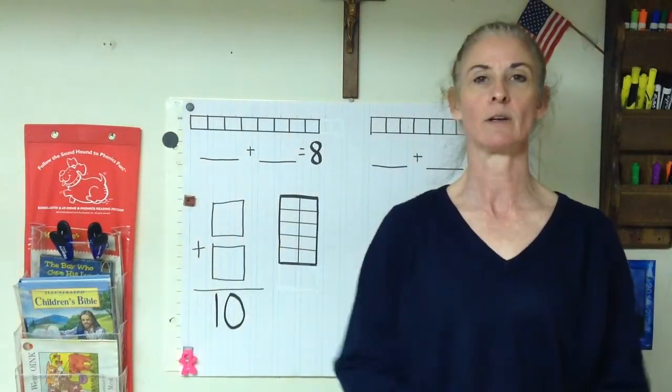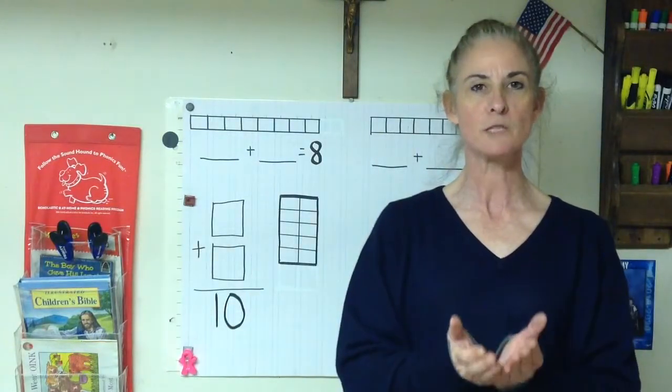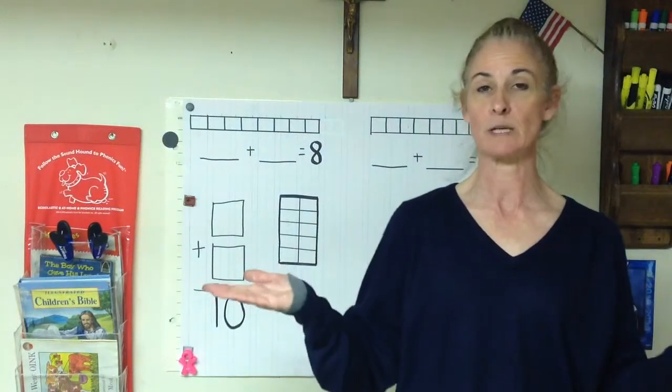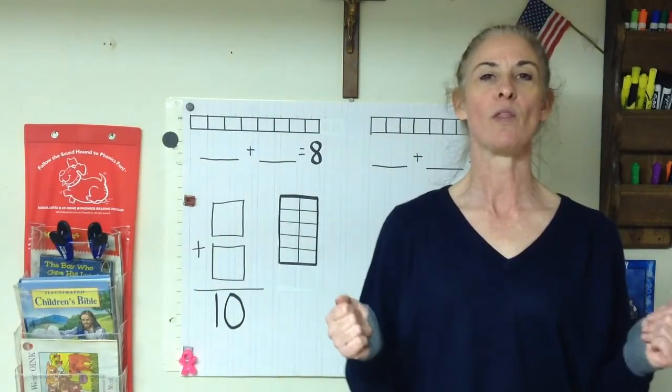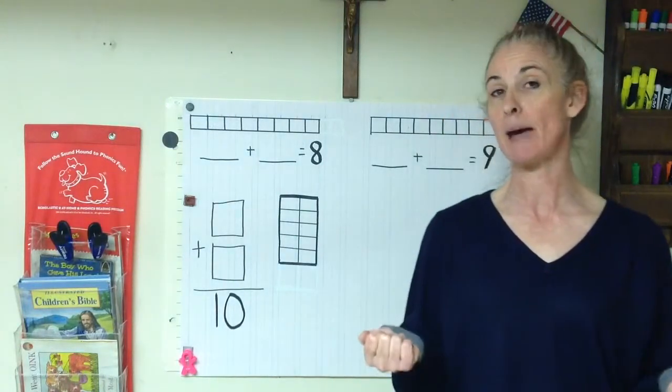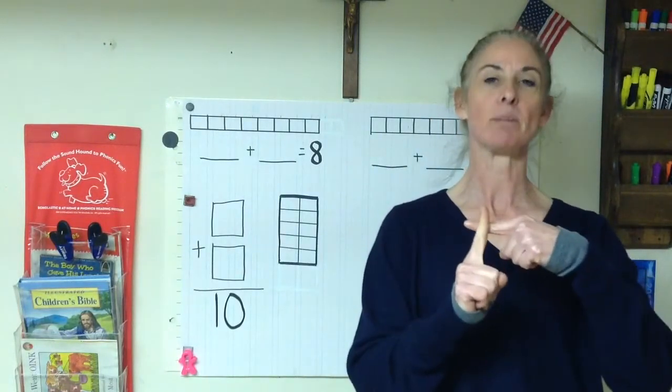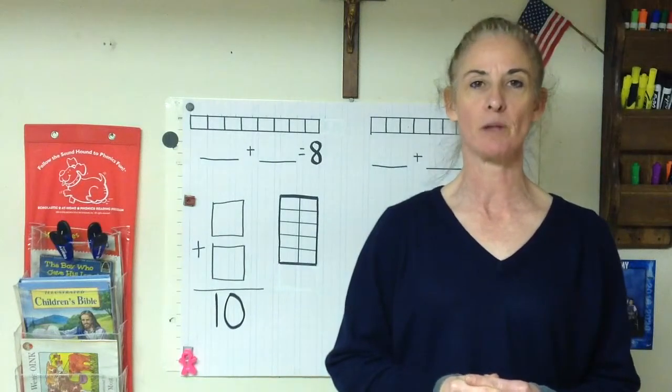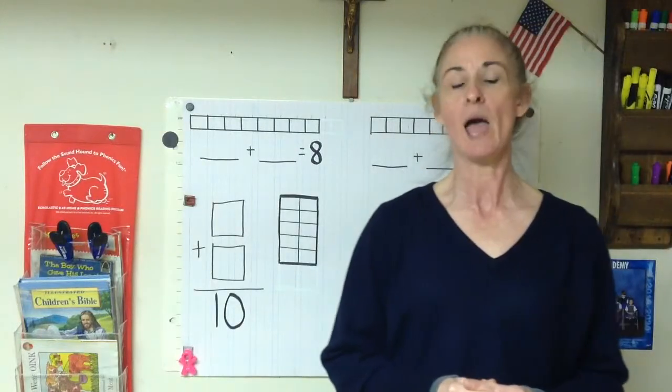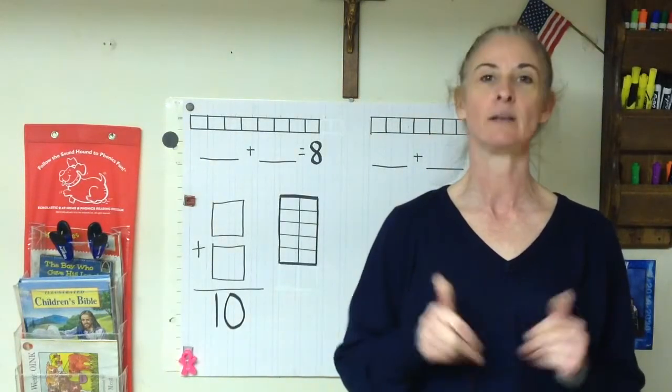What is addition? Right, when we join groups together to form a whole new set. And what do we call the two sets or the two groups or the two numbers that we join together? We call them addends. Very good. And what sign or symbol in math lets us join groups together? Right, the magic plus sign. We join groups together with the magic plus sign. And after we've joined them together, we want to find out how many in all, how many in the whole new set. And we call that our sum.